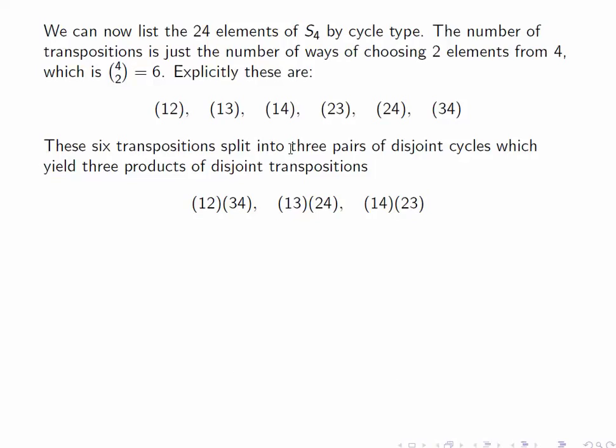These six transpositions split into three pairs of disjoint cycles, such as (12) and (34). So the two elements 1, 2 are disjoint from the two elements 3, 4. When we multiply these together, we get three products of disjoint transpositions. So (12)(34) flips 1 and 2, and it flips 3 and 4. Similarly, we have (13)(24) and (14)(23).